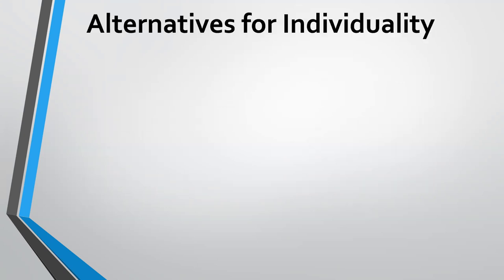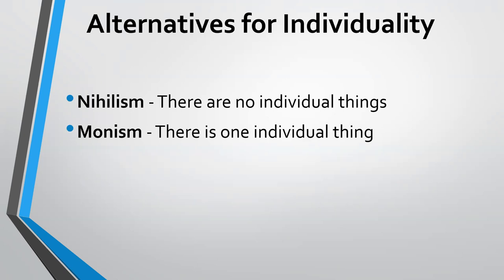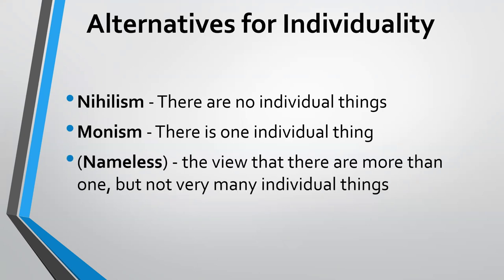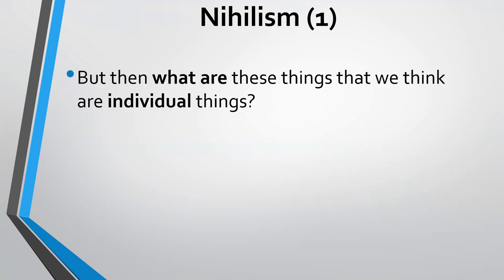Now let's get into the topic of individuality. The common Western metaphysic says individual things include trees, cats, or the Washington Monument. Another alternative is to say there are no individual things — that's nihilism. Or there is really just one individual thing — we'll look at monism in part two. And finally, a nameless view that there are more than one, but not very many individual things. It's nameless because it's hard to enumerate. Of course, the common Western metaphysics says there are very, very many individual things.